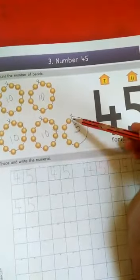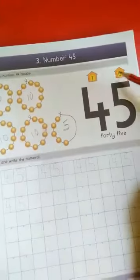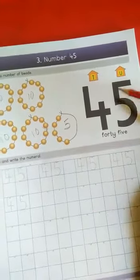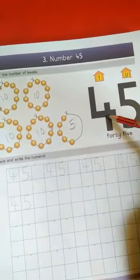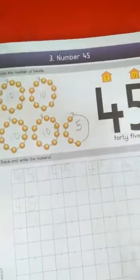How many beads left here? There are 5 beads left. So, in units place, write 5. So, this number is 4, 5, 45. 4, 5, 45, good.